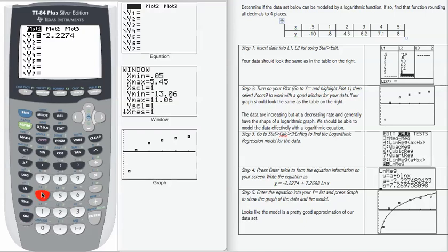So negative 2.2274 plus 7.2698. And then the natural log function is here. We need our x and then end the parenthesis.